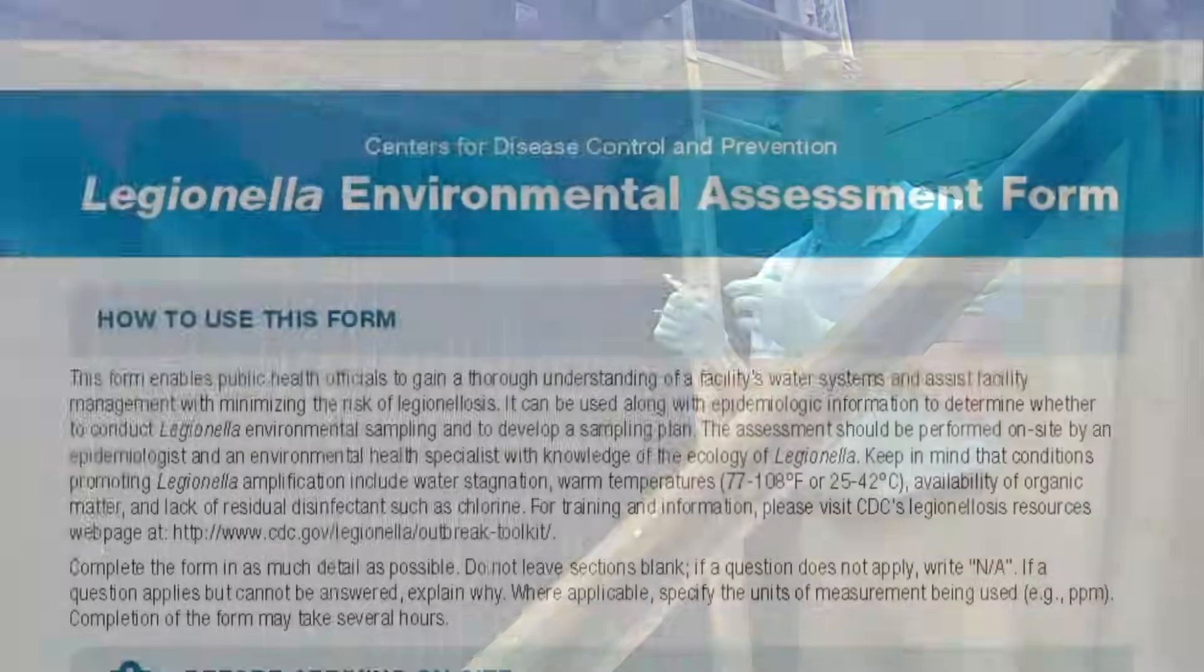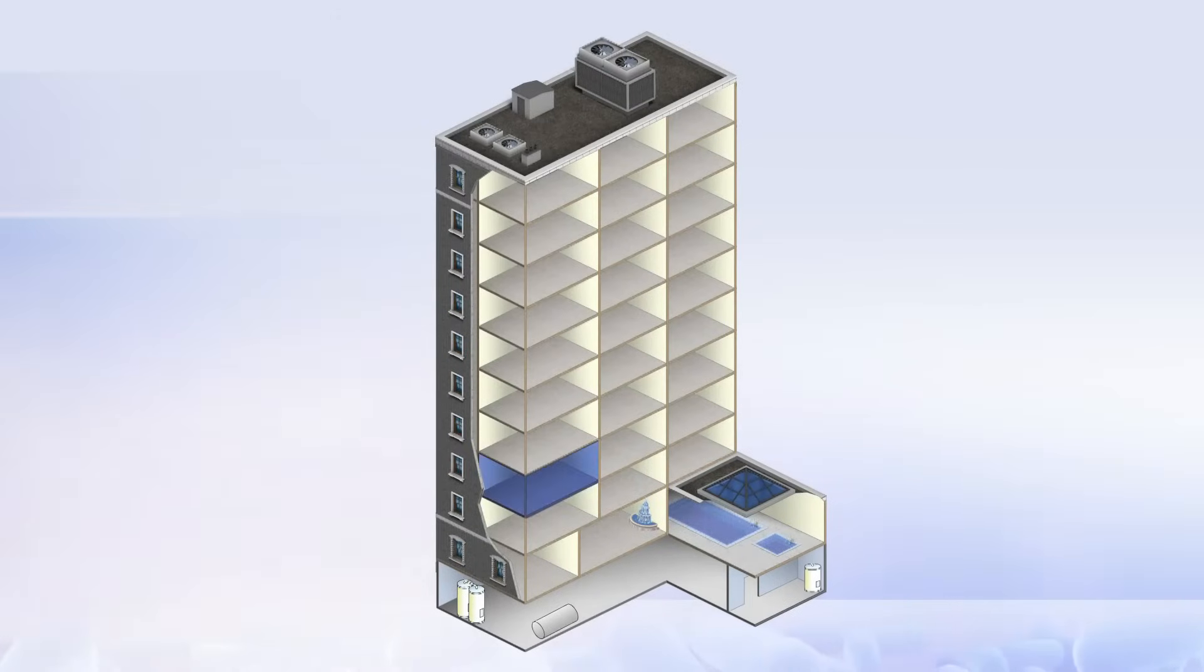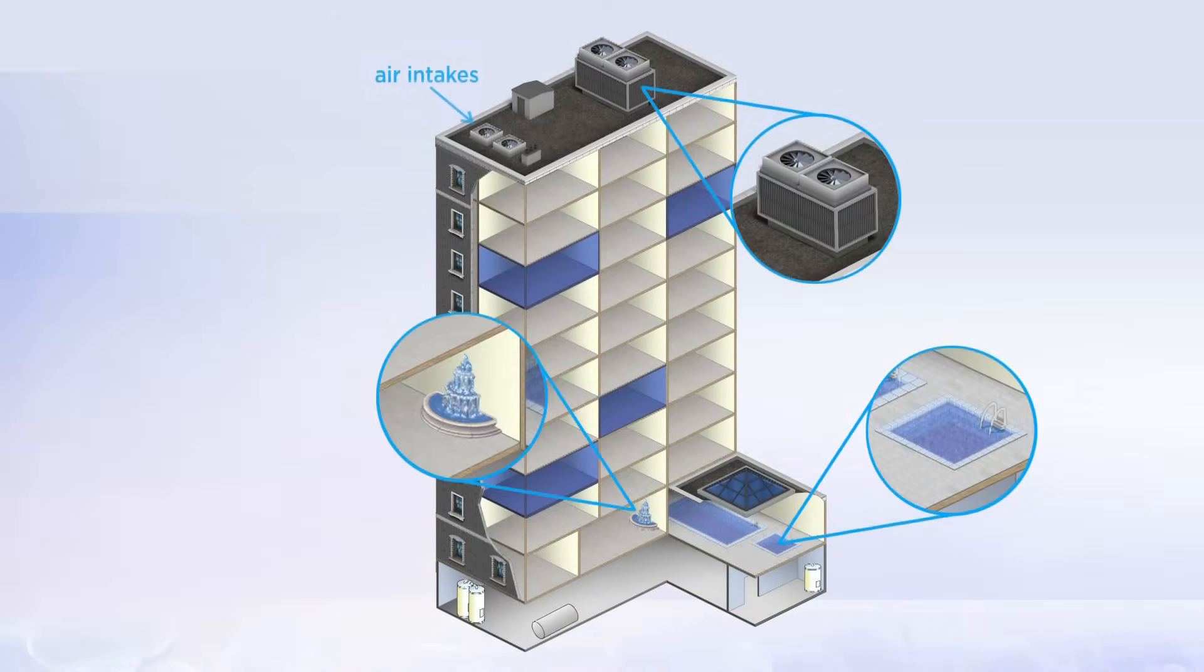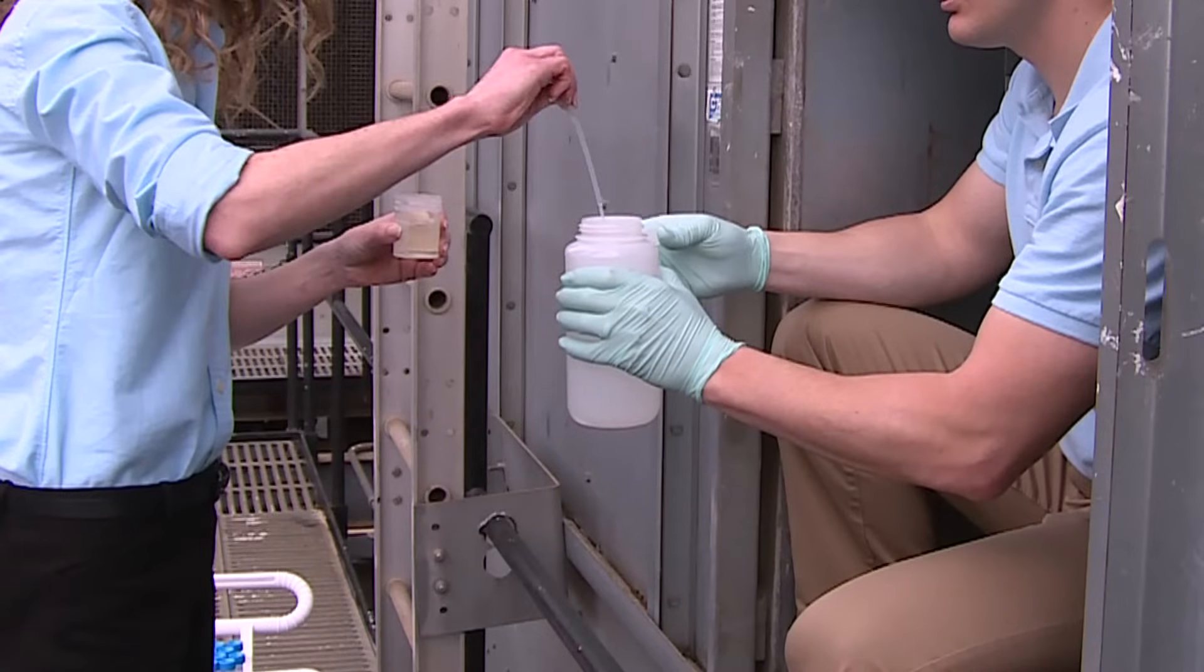Sampling plans are based on the environmental assessment and the epidemiologic data available, including case room numbers and exposures to aerosol generating devices. The purpose for sampling is to determine the source of transmission and the extent of colonization.